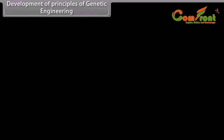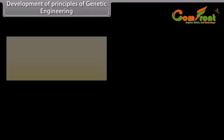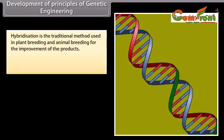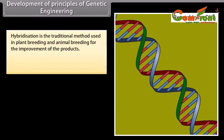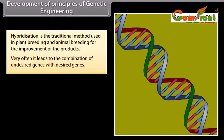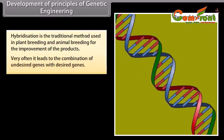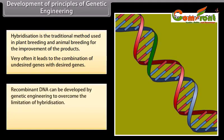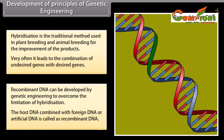Development of principles of genetic engineering. Hybridization is the traditional method used in plant breeding and animal breeding for the improvement of products. Very often it leads to the combination of undesired genes with desired genes. Recombinant DNA can be developed by genetic engineering to overcome the limitation of hybridization.